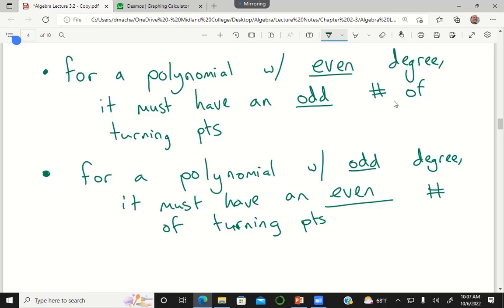What if I have a polynomial of degree 6, am I allowed to have 4 turning points? No, because if it has an even degree, then you have to have an odd number of turning points.